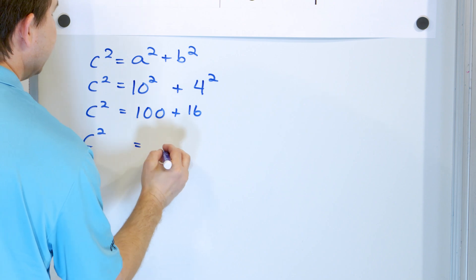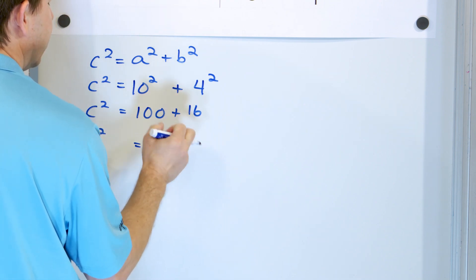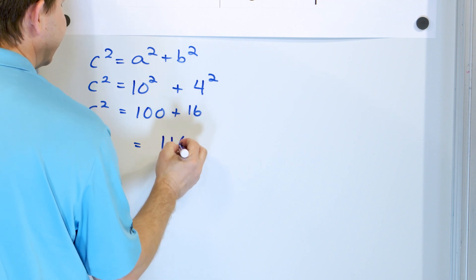So we have C² is equal to 100 plus 16, which is 116.